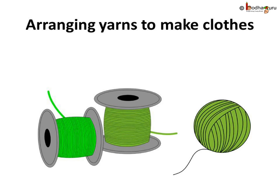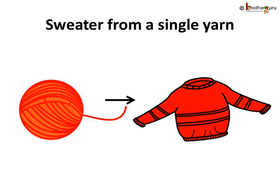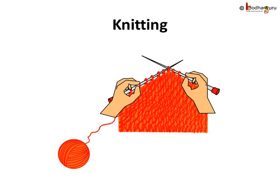The arrangement of yarn is done by a few methods, and these are very interesting to watch. You must have seen your mother or grandmother making sweaters. She uses two big needles to make the looped pattern for a sweater or other woolen clothes. Only a long single yarn is used to make various clothing items — a single yarn turns into a big sweater. Isn't it amazing? This method is called knitting.